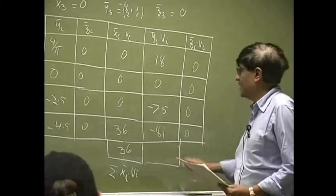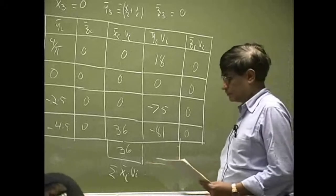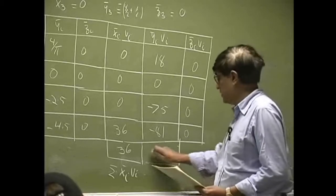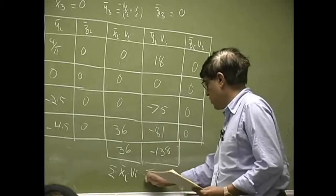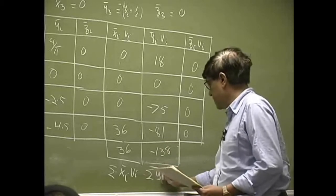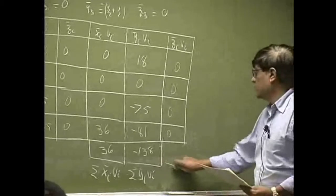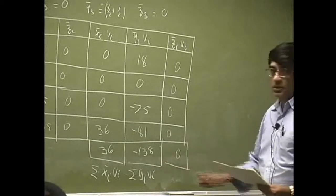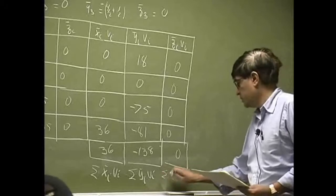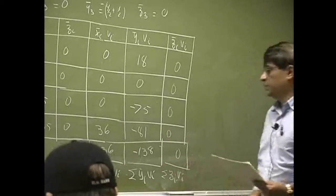So we are going to add everything up here, that comes out to be negative 138. And that's Yi bar times Vi. Then you add everything up here, so all zeros, and that will be Zi bar times Vi.